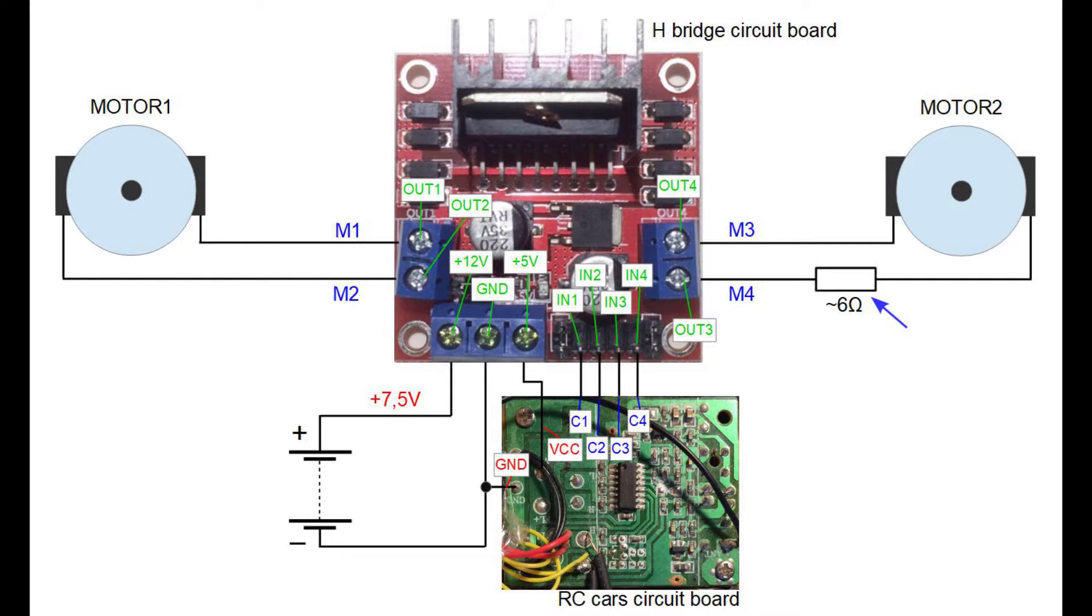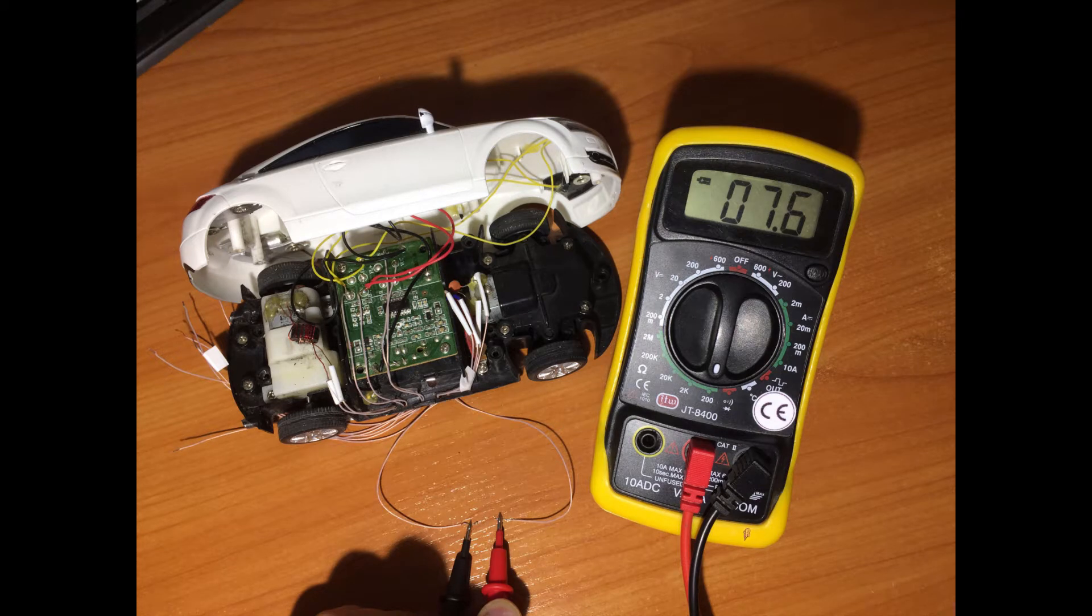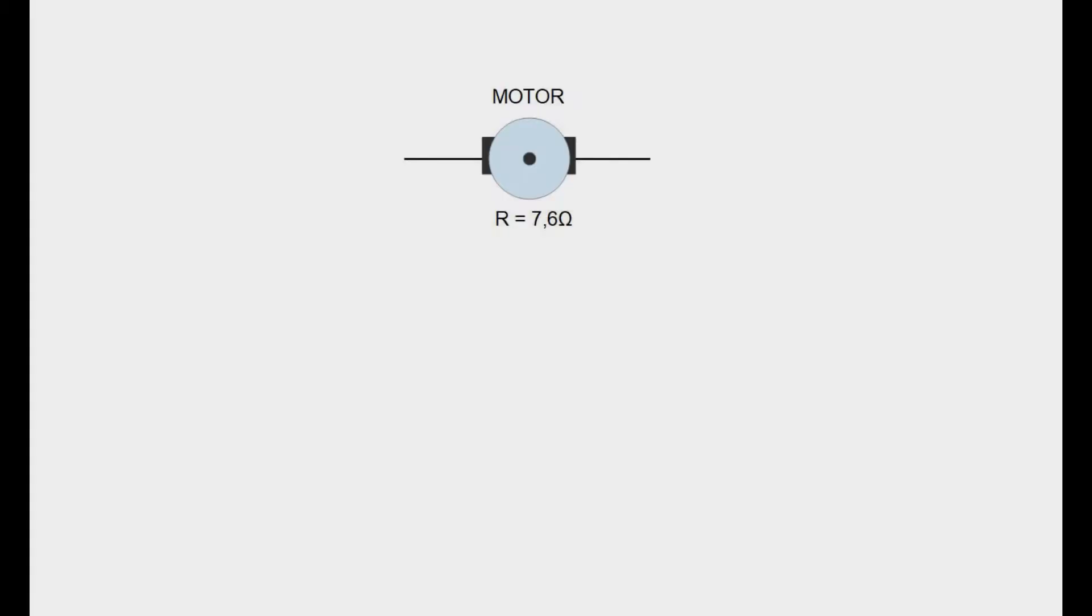I will show you the math behind this so that you can choose the right resistor for your case. In my case the motor has resistance of 7.6 ohms while it's not spinning. You can measure that by simply applying multimeter probes to the two wires that are coming from the motor. Normally it should operate on 5 volts so you can calculate the current that flows through the motor by using Ohm's law.